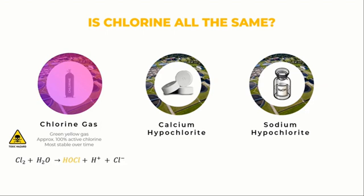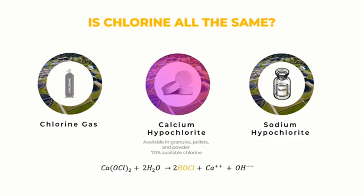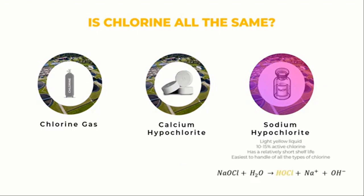Chlorine gas is the least expensive form of chlorine. Calcium hypochlorite is the second chemical form — a white, corrosive substance produced from chlorine gas, available in tablet or granular powder form. Calcium hypochlorite raises the pH of the water rather than lowering it like chlorine gas does. The third form, sodium hypochlorite, is most commonly associated with home bleach. It is the simplest to handle — a light yellow liquid with a limited shelf life. Sodium hypochlorite also raises the pH of the water being treated, and requires a lower concentration of chlorine to disinfect water compared to calcium hypochlorite or chlorine gas.